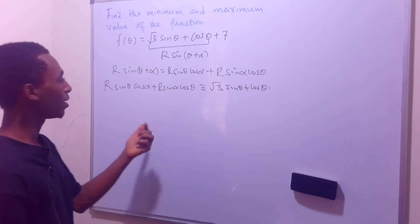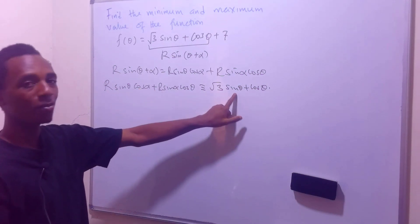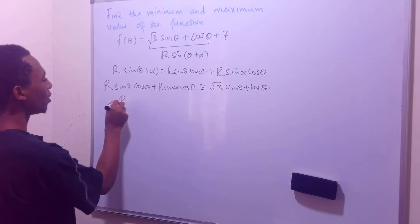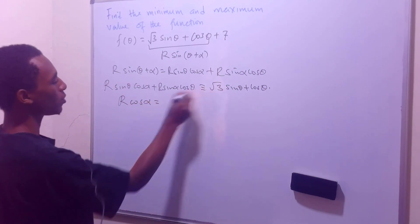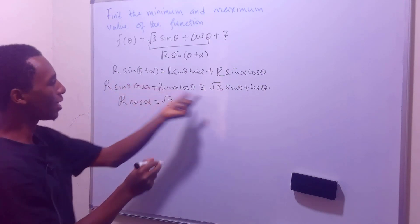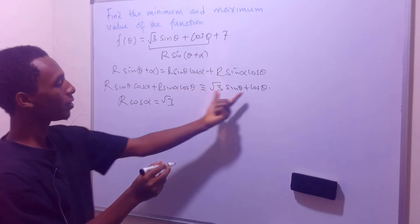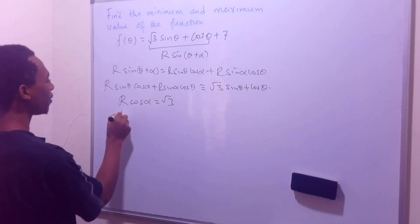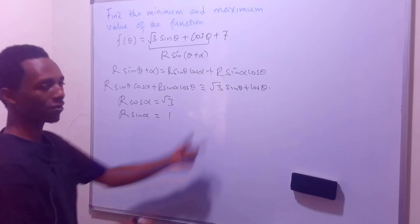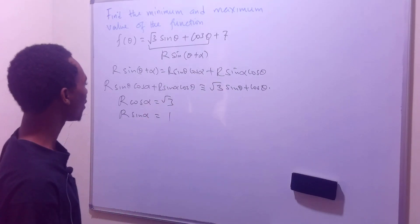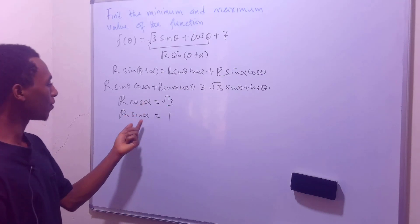So from here we can equate this to this because we see the sin(θ) component here. So I'll just conclude that r cos(α) = √3 because the sine cancels. And then we also see from this, if I equate this to this, then I'll have r sin(α) equals just a coefficient of 1 there. So from here we can find alpha and we can also find r.